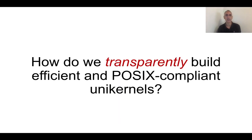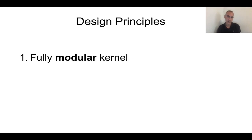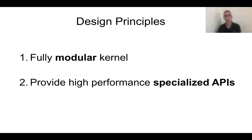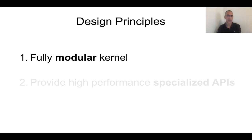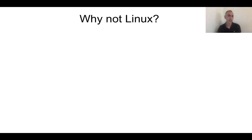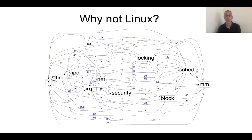So the question is: how do we transparently build efficient and POSIX-compliant unikernels? We had two design principles when building Unikraft. One is that we wanted a fully modular kernel, and the second is that we wanted to provide high performance via specialized APIs. Why couldn't we just do with Linux? To answer this, we did a graph of all the dependencies between major Linux subcomponents. If you see a line between two components, it means there's a dependency, and the number on top of the line means how many dependencies there are. It becomes apparent that it's not easy to remove one subcomponent without serious engineering work.